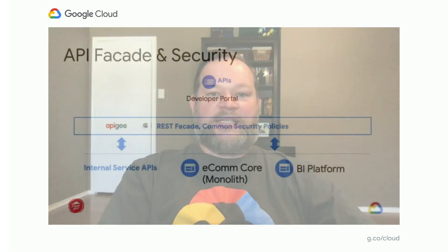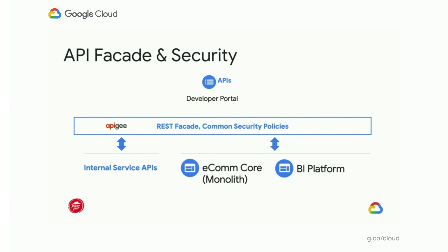One of the first things we really focused on was creating an API facade and security around our APIs. We did that by implementing Apigee, which very quickly gave us the ability to establish a common authentication structure and strategy with a common security and authentication model across all of the things we were converting into APIs. Along with that was building out an API layer over the top of the e-commerce core so that we could plug all of the functionality of that core into the new API gateway layer.